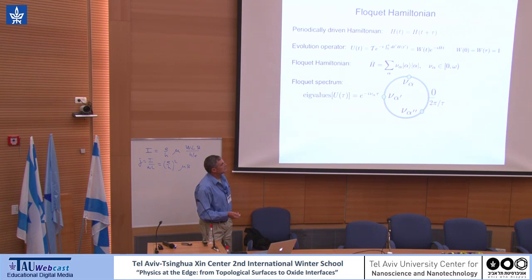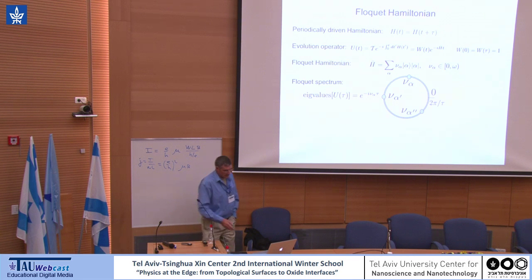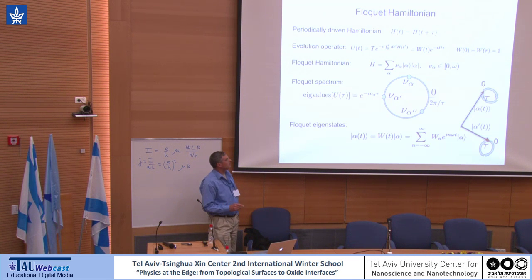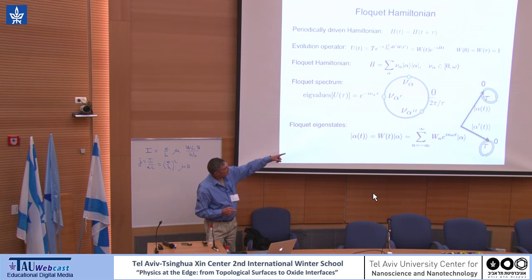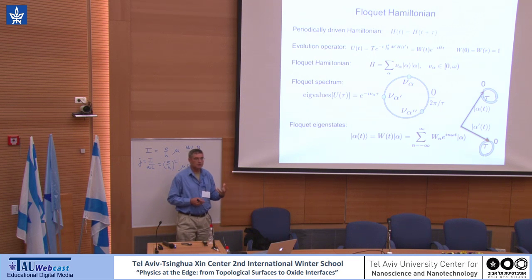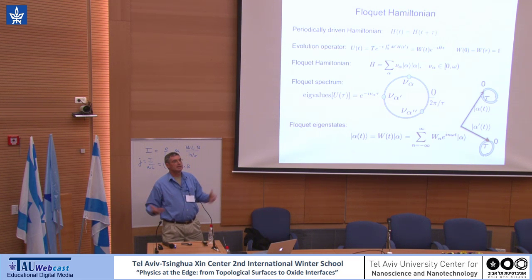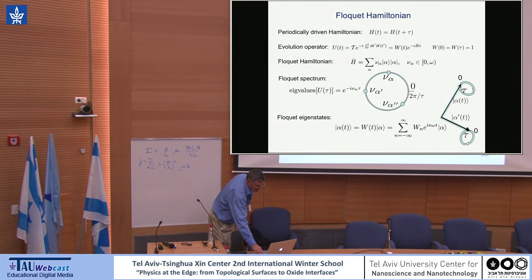The Floquet Hamiltonian is given in terms of these frequencies. It will tell you what are the states that come back to themselves after a period. These Floquet eigenstates are periodic — they do some rotation in Hilbert space, but after period omega they come back to themselves. They're the most natural basis to describe steady states and long-time-scale observables, and a natural basis to describe the density matrix of the system.